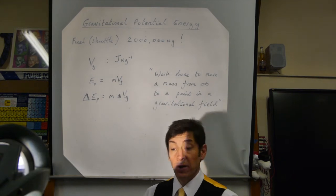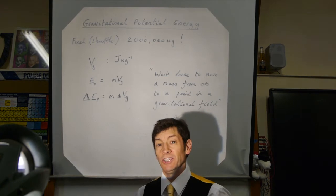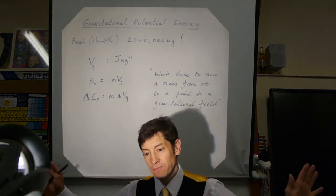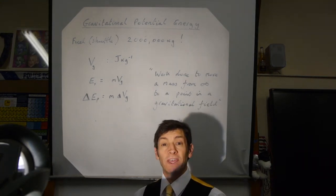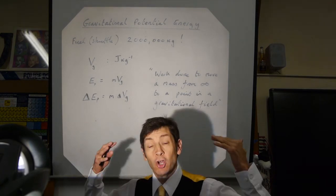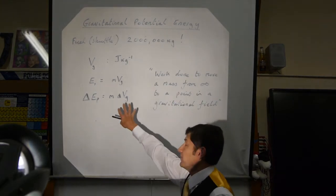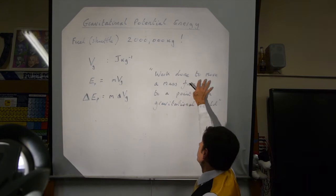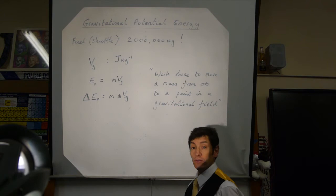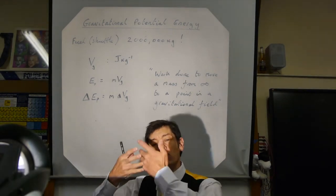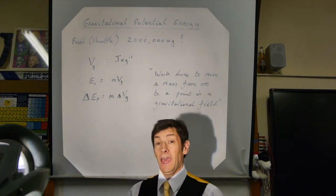The zero of gravitational potential energy is defined at infinity, so numbers often come out negative. We define gravitational potential energy as the work done to move a mass from infinity to a point in a gravitational field — it's the energy released from the gravitational field, which is why in previous videos it had a negative value.